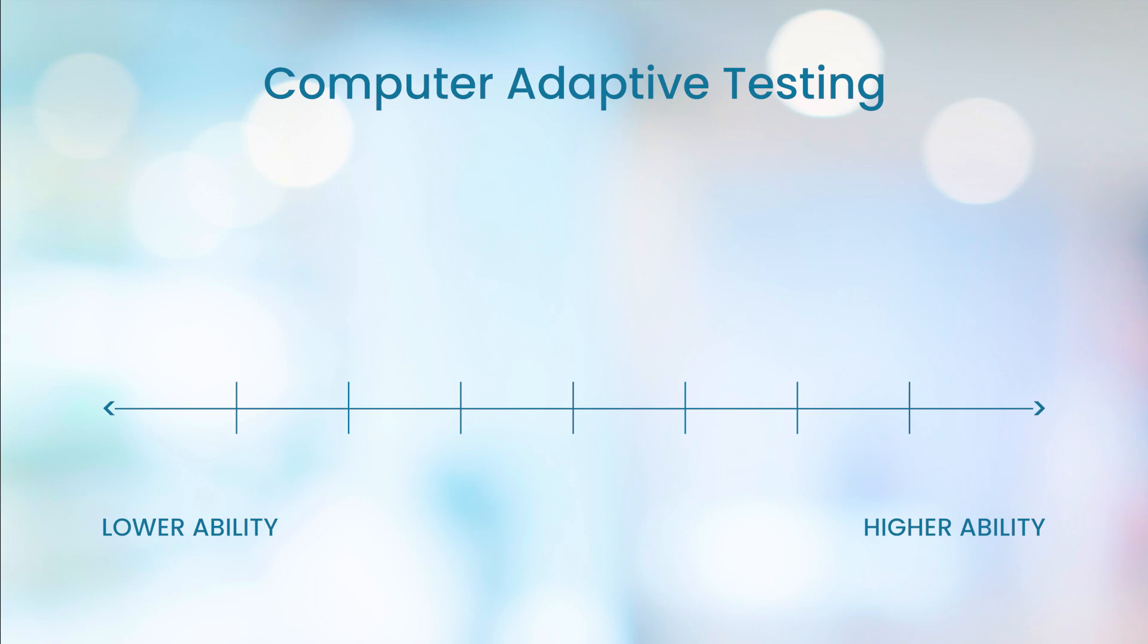Here's our scale again. Let's label the scale from negative 3 to 3, since that's about the range we use on the NCLEX. The test begins with a question of medium difficulty, which we'll put right at 0 on our scale. The test taker can either get this question right or wrong.